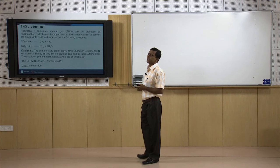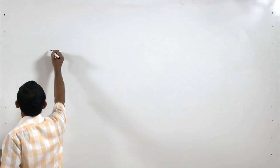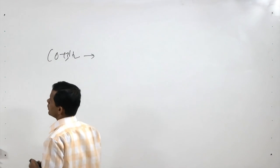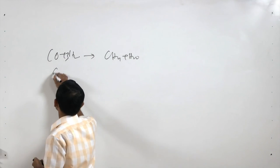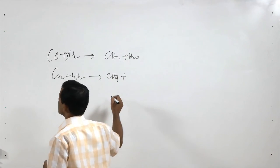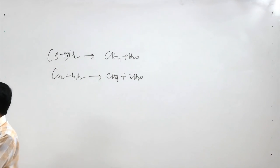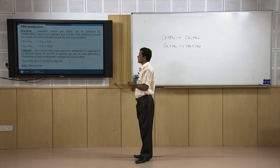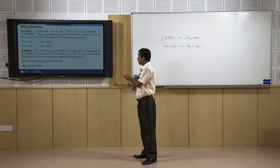Next is synthetic natural gas (SNG). CH₄ can be produced from syngas through methanation: CO + 3H₂ → CH₄ + H₂O, and CO₂ + 4H₂ → CH₄ + 2H₂O. With suitable catalysts, CO and H₂ in syngas can be converted to methane — called synthetic natural gas. A number of catalysts have been identified with their relative preference order mentioned.